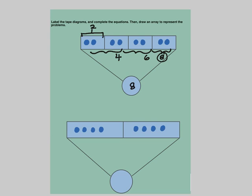Next, let me draw an array, because they are asking us to draw an array to represent the problem. 4 groups of 2: 1 group of 2, 2 groups of 2, 3 rows of 2, and 4 rows of 2. That is an array for this problem. Now let's make a multiplication number sentence: 4 groups of 2 equals 8.